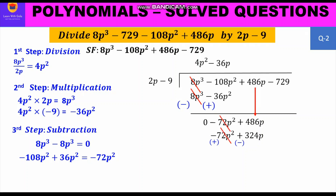New dividend: 162p − 729. Division: 162p ÷ 2p = 81, which is the next quotient term written on top. So the full quotient is 4p² − 36p + 81.